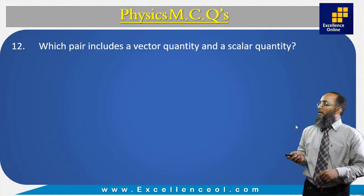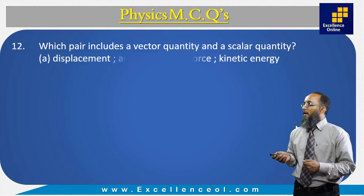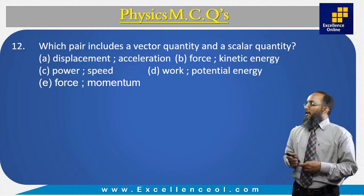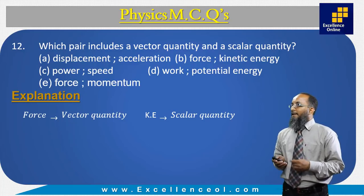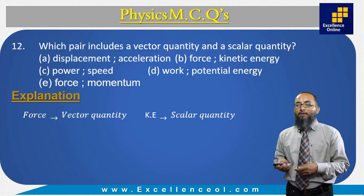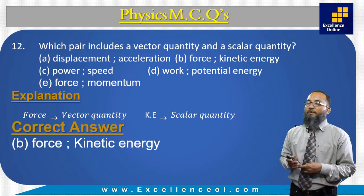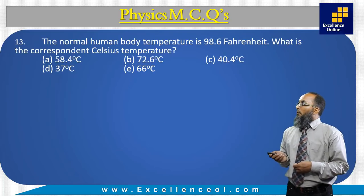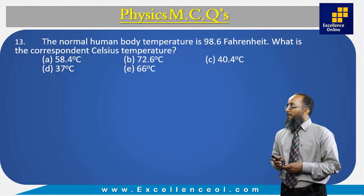The next question: which pair includes a vector quantity and a scalar quantity? Looking at option B, force is a vector quantity and kinetic energy is a scalar quantity. Therefore the correct answer is B: force and kinetic energy.